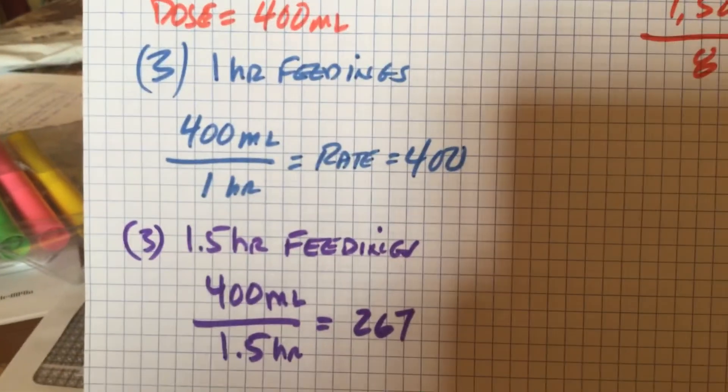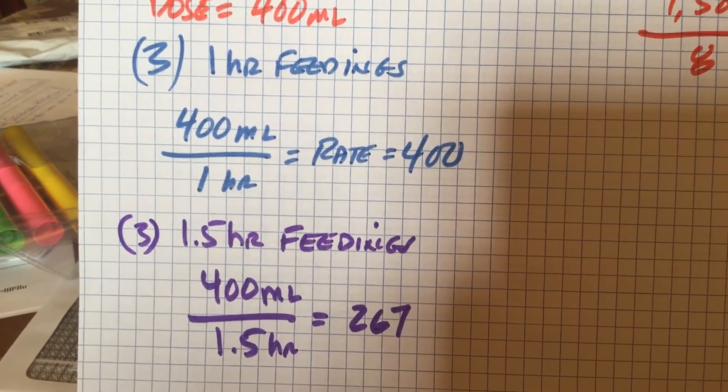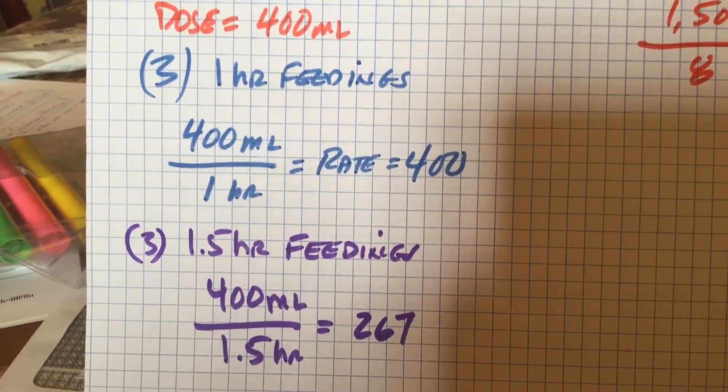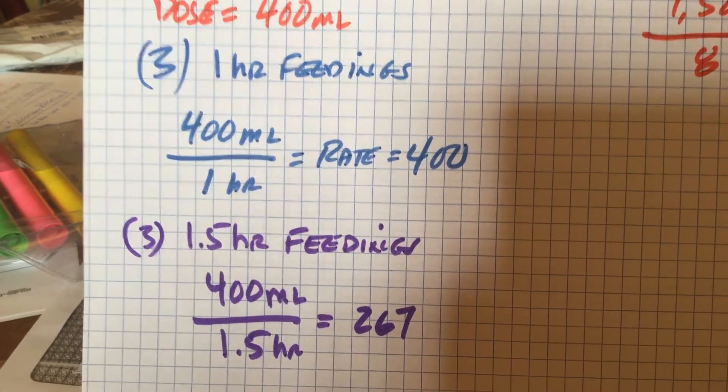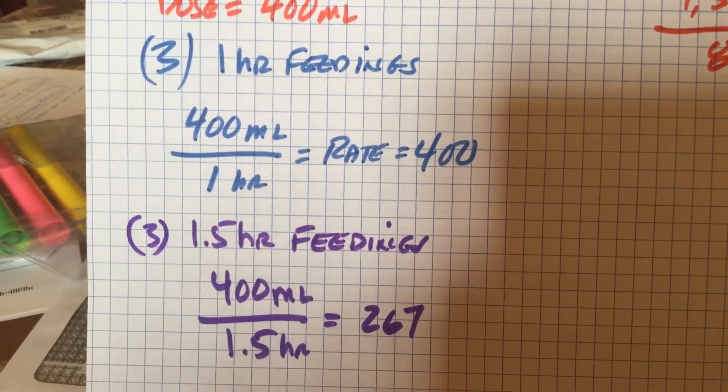If, say now, we wanted to extend the feeding, three feedings for an hour and a half to make the feeding rate go slower, we would use 400 milliliters over one and a half hours, which is 267. We round to 267.